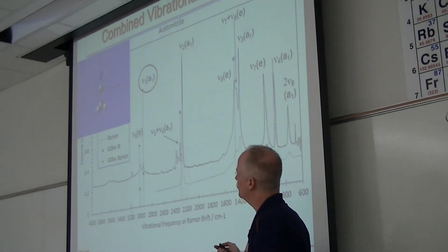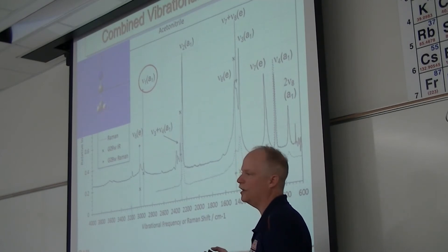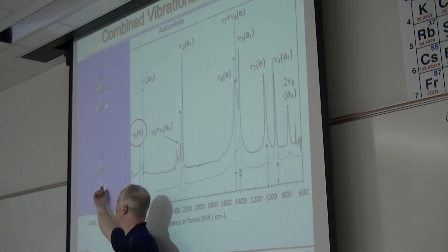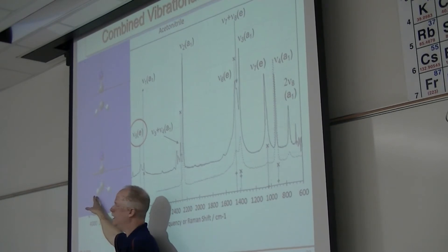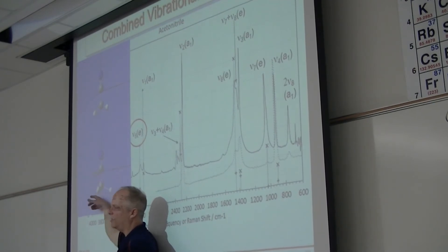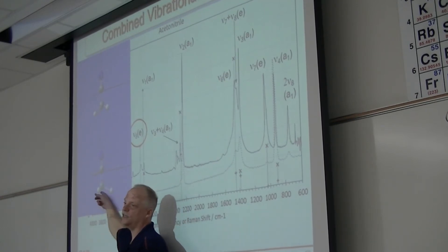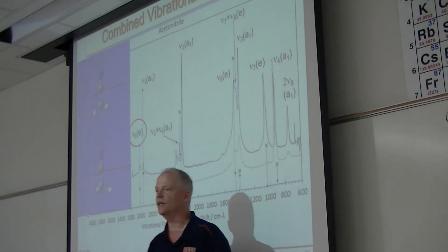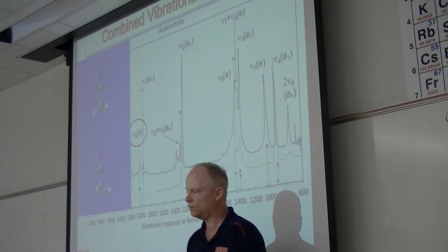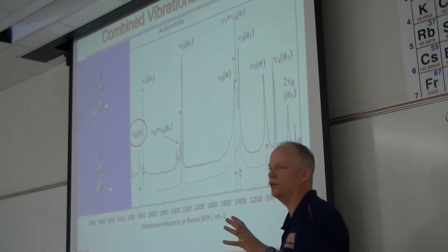Now we get into the CH stretches. Here's the symmetric stretch — all three CH bonds are expanding at the same time. Then the asymmetric stretch: one CH bond is stretching a lot while the other two compress. If you take the top of that molecule off, it's the same motion you see in ammonia — any time you have three atoms bonded to one, you'll have these kinds of modes. Notice the bond angles are not changing; that would be bending. This is a stretch — bends and stretches are completely different.